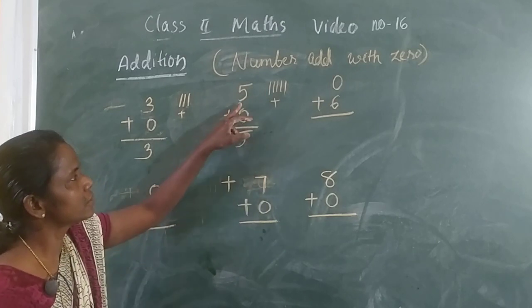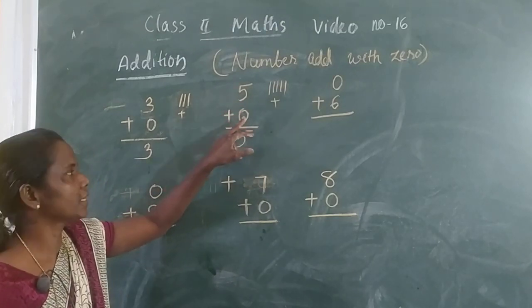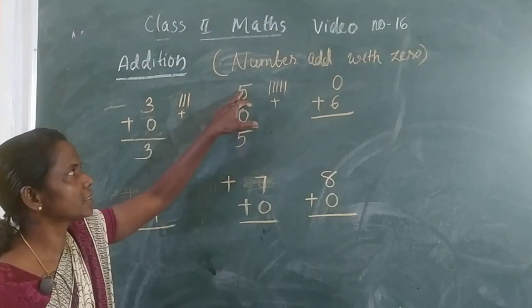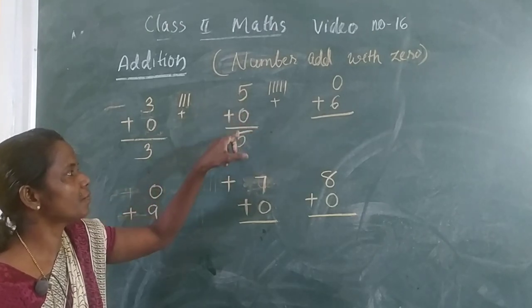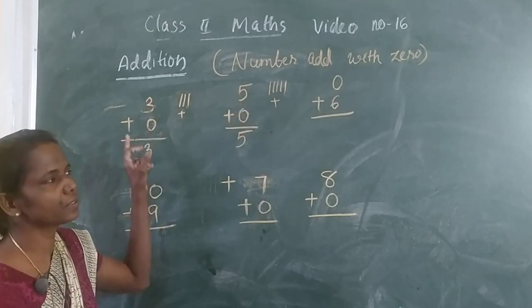Is it clear? 0 add with any number, that is same number. Here 5 plus 0, 5. 3 plus 0, 3.